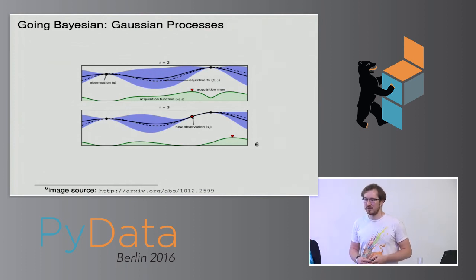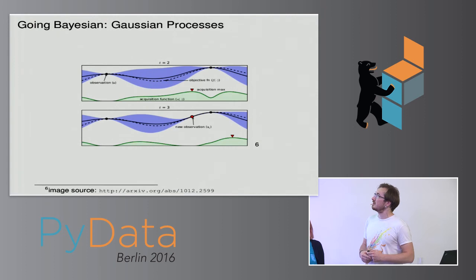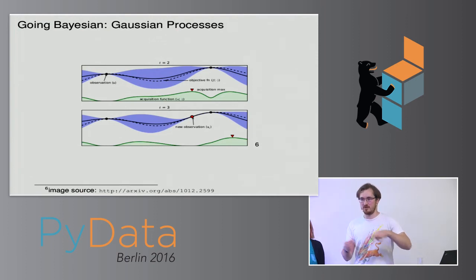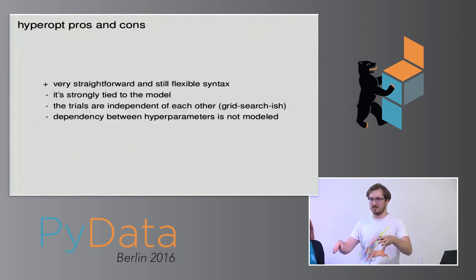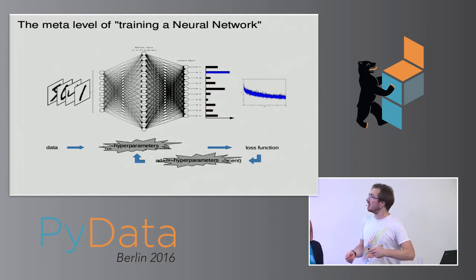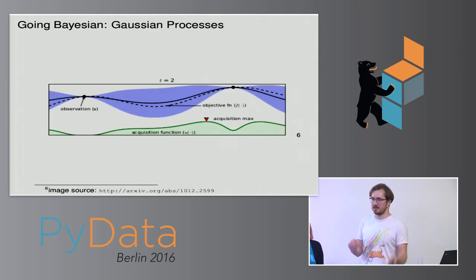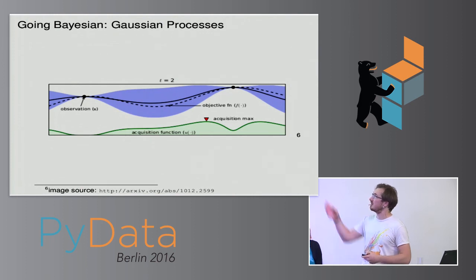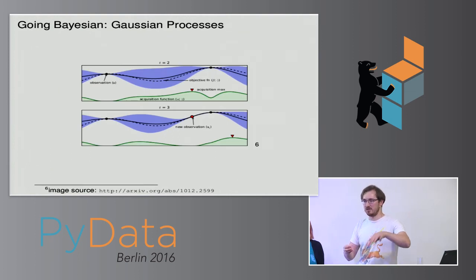The acquisition function gives me a point which is basically a set of hyperparameters. Then I run a whole neural network training process — for example, it says use this many neurons and this learning rate. I put this into the inner loop, the inner loop runs, I get a new result, and I can update the function I was estimating. The update happens after the whole neural network has trained once — for example, for a couple of hours — and then I get a new data point.